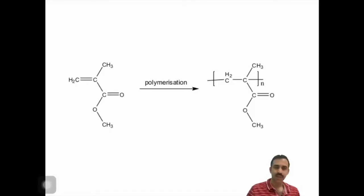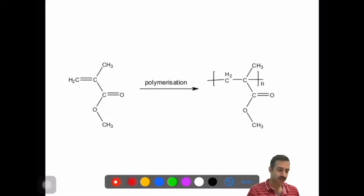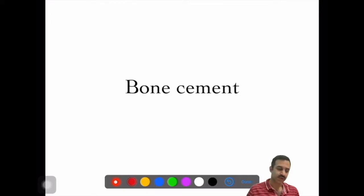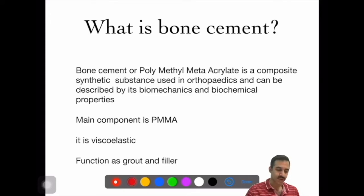Today we will be discussing bone cement. This is the chemical formula of bone cement. It is very difficult to remember, but we get important information about what is happening in polymerization from this formula. We can see that the carbon-carbon double bonds are converted into single bonds in polymerization.